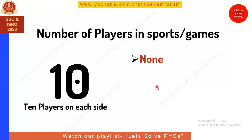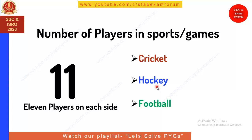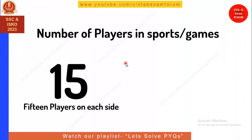Ten players on each side — there is no such game. Eleven players on each side is very popular: cricket, hockey, and football all have eleven players on each side — simple ones we all know. Twelve, thirteen, and fourteen players on each side — no such game. Fifteen players on each side: that is rugby football, played prominently in America. Rugby has fifteen players on each side.